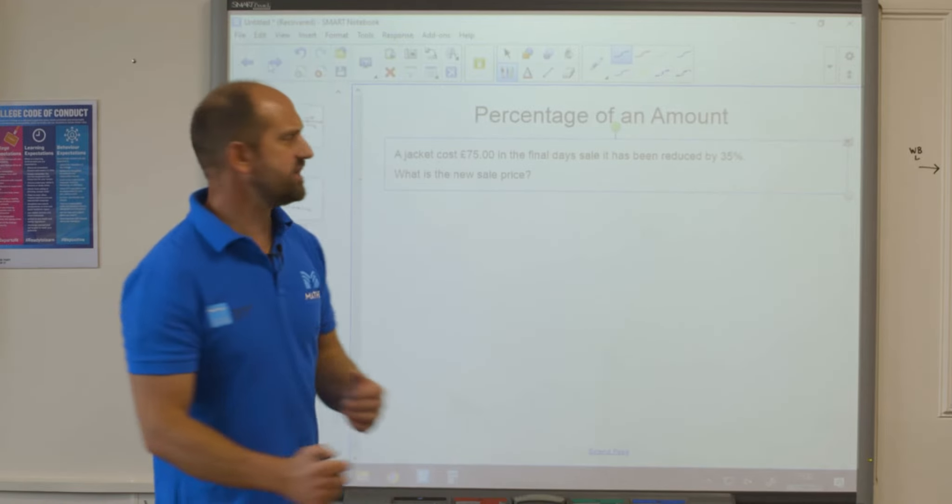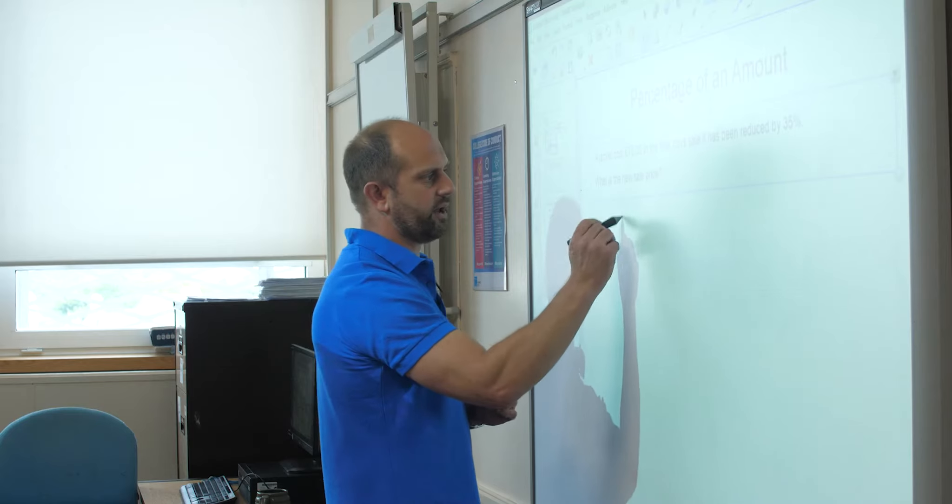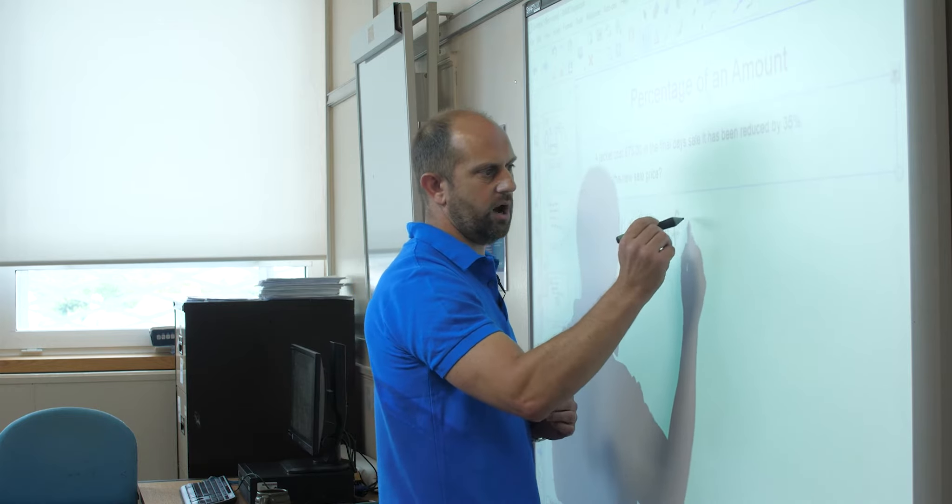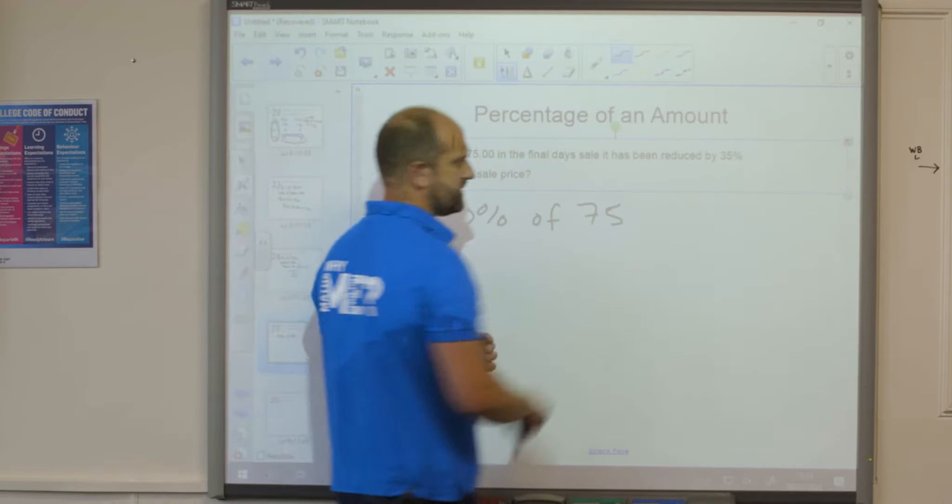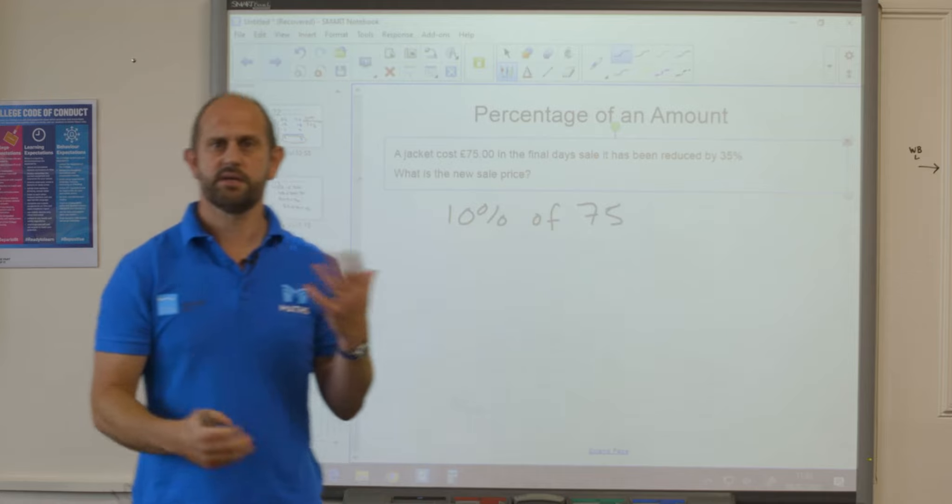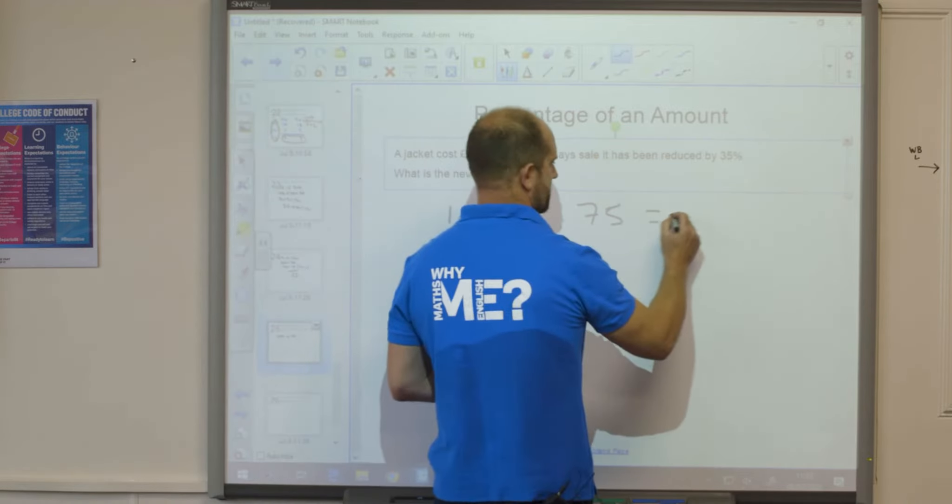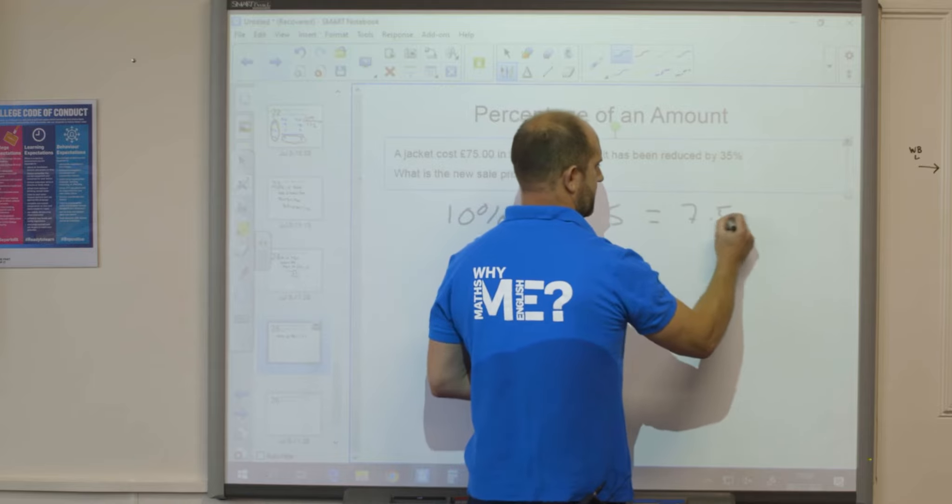We're going to do exactly the same again then. So I now need to find 10% of 75. Well I know that 75 divided by 10 is 7 pounds 50.